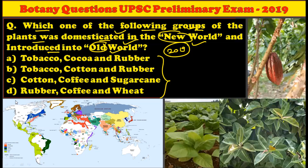In historical sense, the new world is considered as the American continent. You can observe in this particular picture the western part of the world which is newly discovered — this part of the world is called the new world. While the old world consists of the Africa, Europe, and Asian continents. The term new world is used for the western continent, in particular the American continents. So in this question, we have to find plants which are domesticated in the new world and later introduced into the old world.